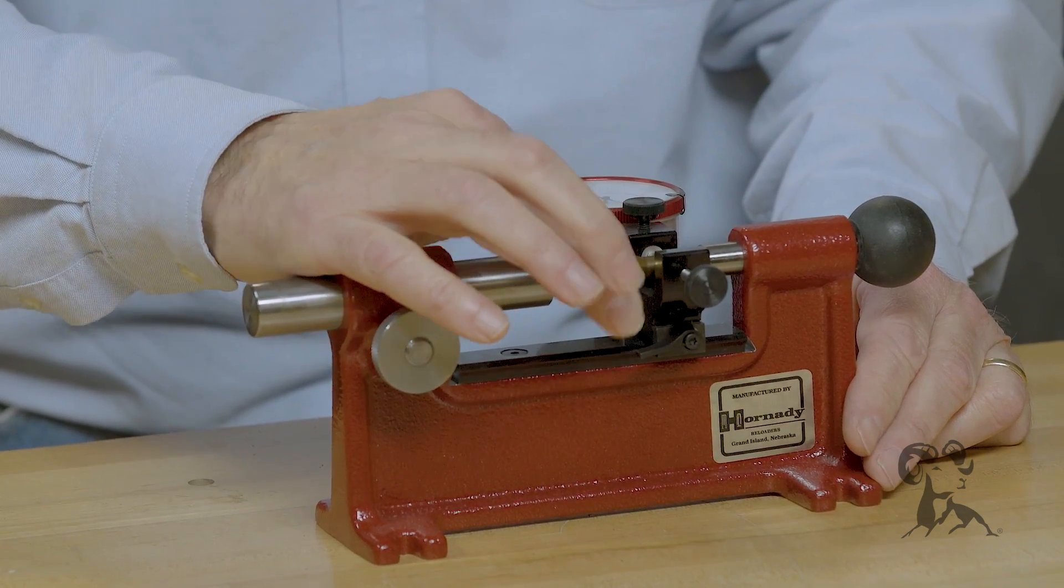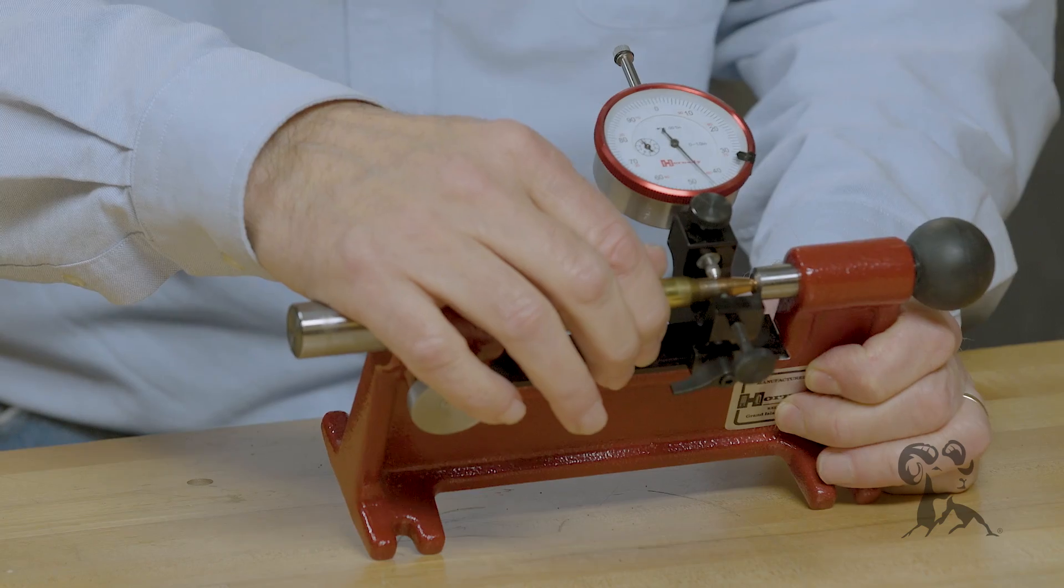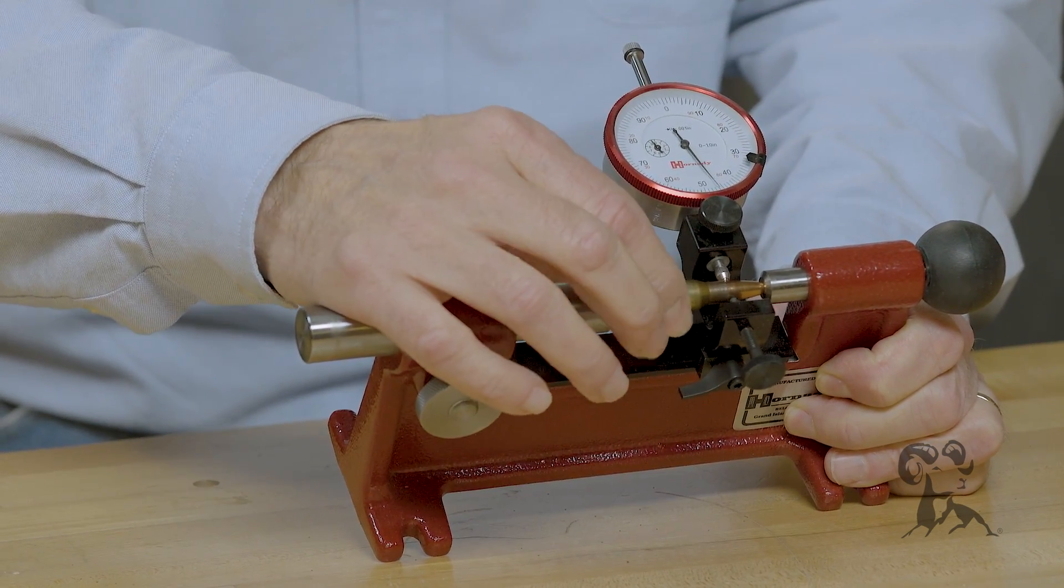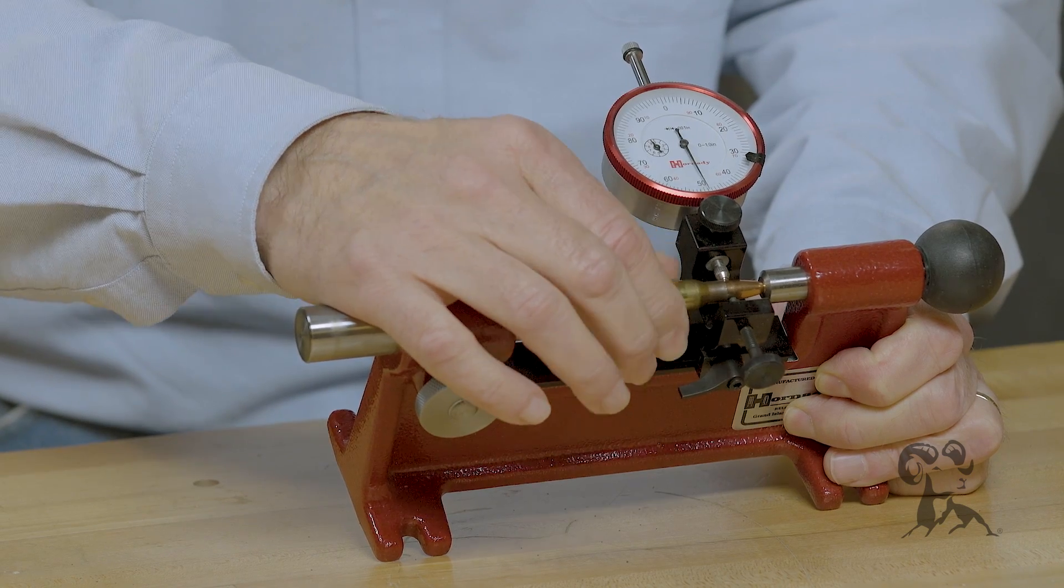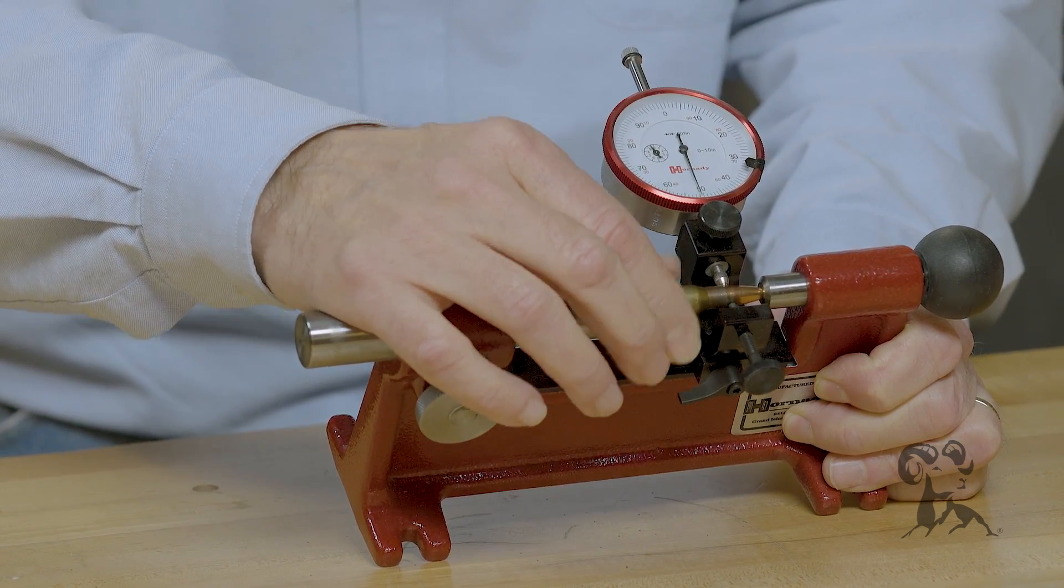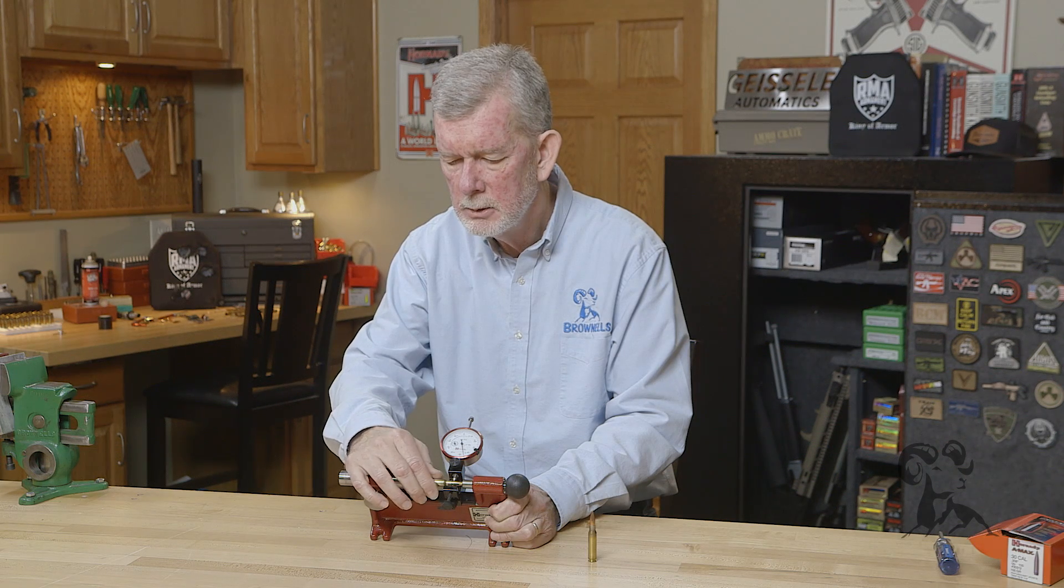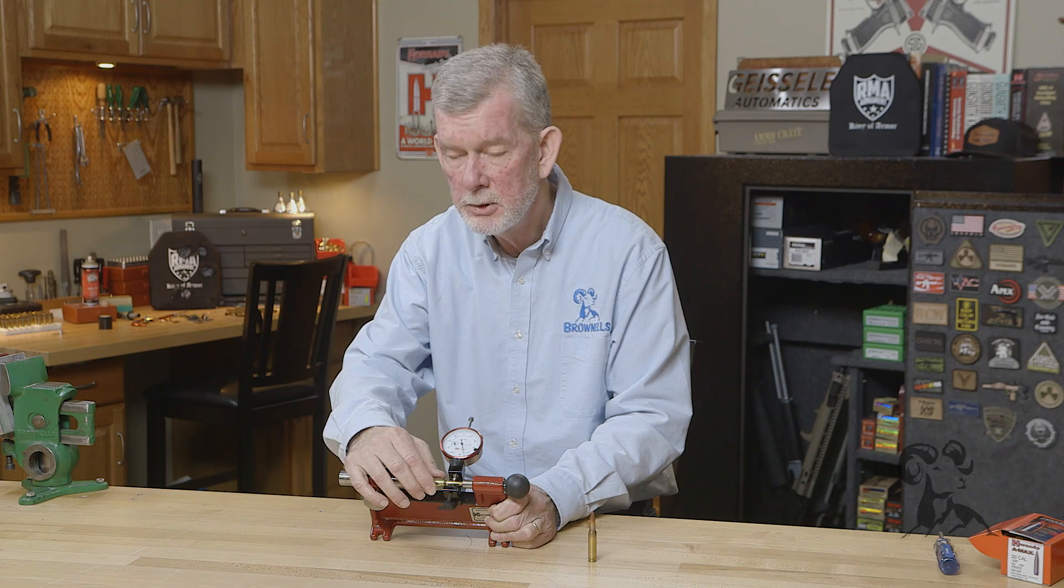And you rotate the cartridge, and as you can see, we've got about six thousandths run-out. So what do you do? Well, on most concentricity gauges there's nothing you can do, just shoot it as it is.